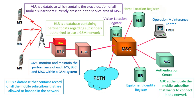Next is EIR — Equipment Identity Register. EIR is a database that contains records of all mobile subscribers that are allowed or banned in the network. If you are banned in the network, then you cannot enter the network and you cannot make a call.